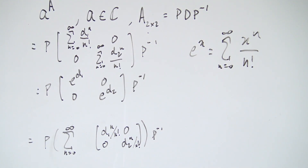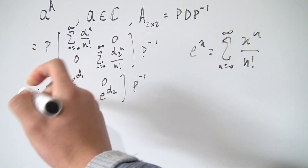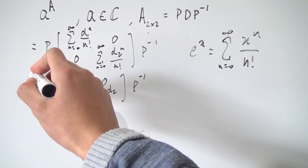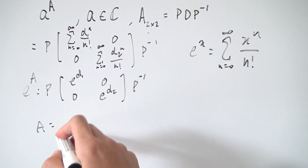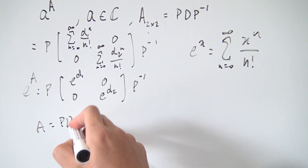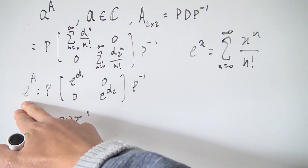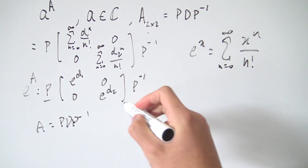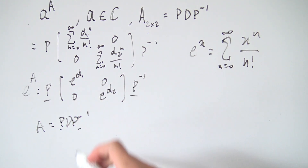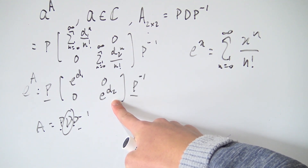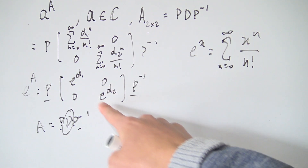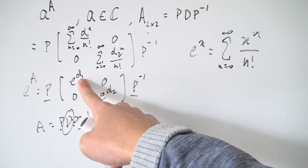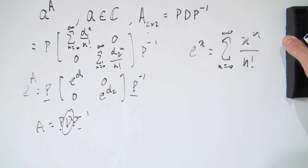So the result is P times the diagonal matrix with entries e to the d1 and e to the d2, times P inverse. In other words, if A decomposes as P D P inverse, then e to the A equals P times the diagonal matrix where each entry d is replaced by e to that entry, times P inverse.